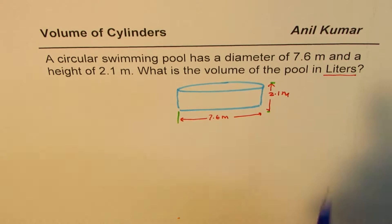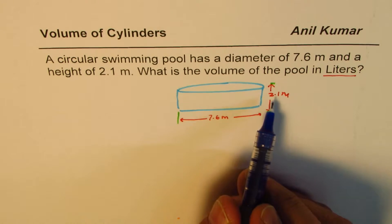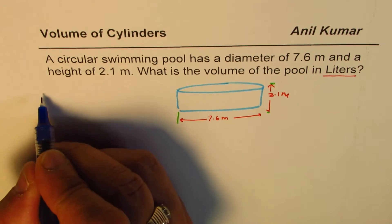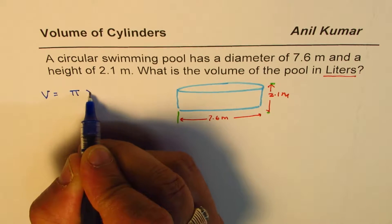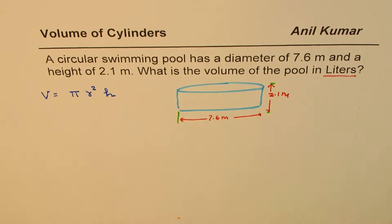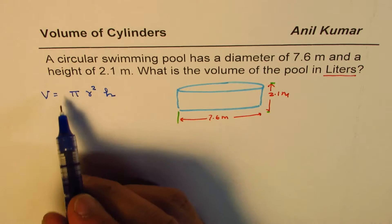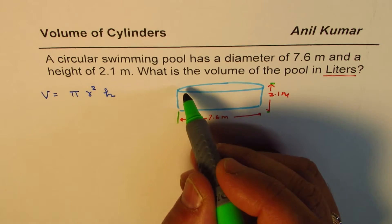So let's write down the formulas which you might need. First is the volume itself, which is π r² h. So that is the volume. Now π r² is the area of this circle.